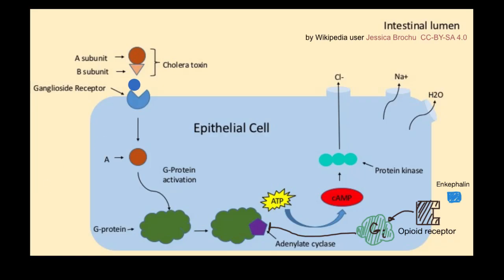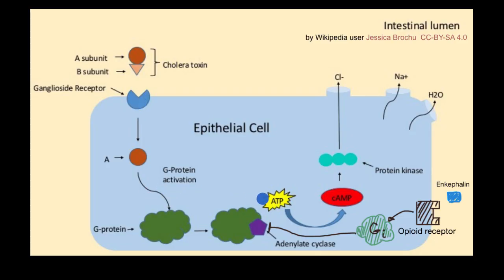What we have depicted here is a signal transduction pathway that gets started with the cholera toxin. We've talked about signal transduction pathways in other videos, but it's the idea that molecules outside of the cell interact with receptors on the surface of the cell, which then create a whole chain reaction of events that cause that cell to do something.